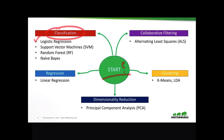For instance, in classification you have logistic regression, support vector machines which are very popular, random forests, or naive Bayes. You have regression — for example, linear regression that's great for continuous valued functions — and collaborative filtering or recommender systems with alternating least squares.